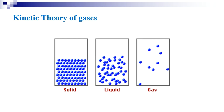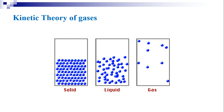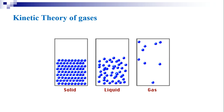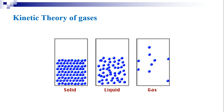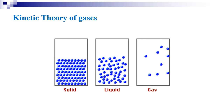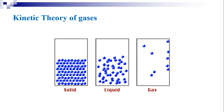In case of solids, intermolecular distances are small and the only motion is vibration or oscillation. In case of liquids, molecules are free to move within the volume of the liquid; since they are loosely bound, intermolecular distances are large compared to solids. In case of gases, intermolecular distances are very large compared to both solid and liquid, and the molecules are free to move all over the available space.